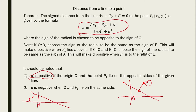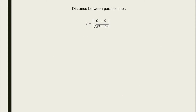For the distance between two parallel lines, d = |c' - c| / √(a² + b²). We take the absolute value because we're computing distance only.